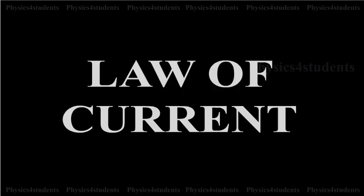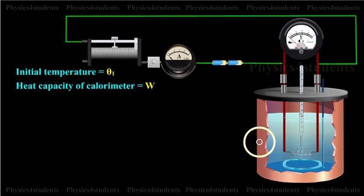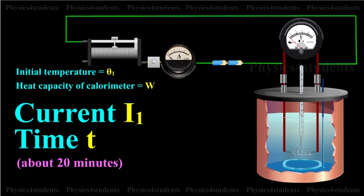Law of Current. The initial temperature of water is measured as theta 1. Let W be the heat capacity of the calorimeter and contents. Now a current of I1 is passed for a time of T, about 20 minutes.